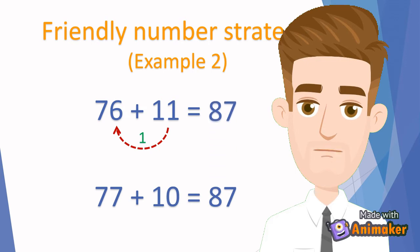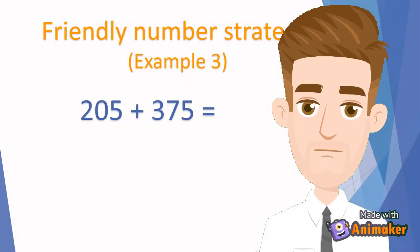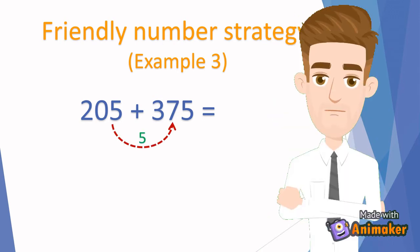And in example 3, 205 plus 375 can be made friendly by moving 5 from 205 to 375. That is, 200 plus 380, which equals 580.